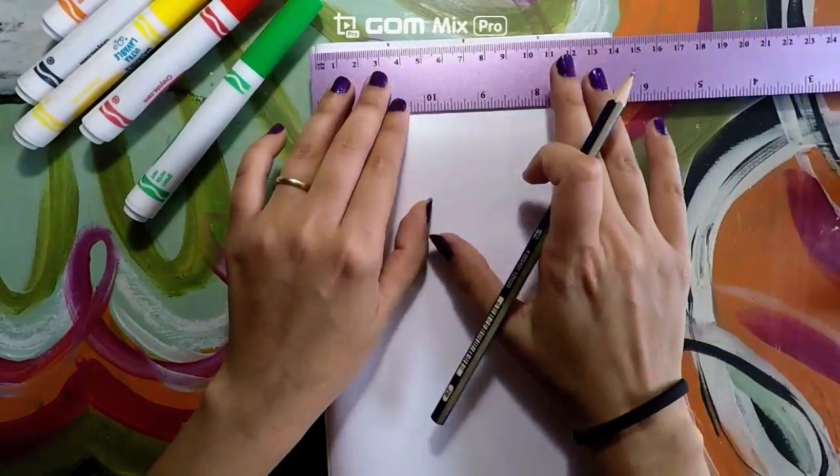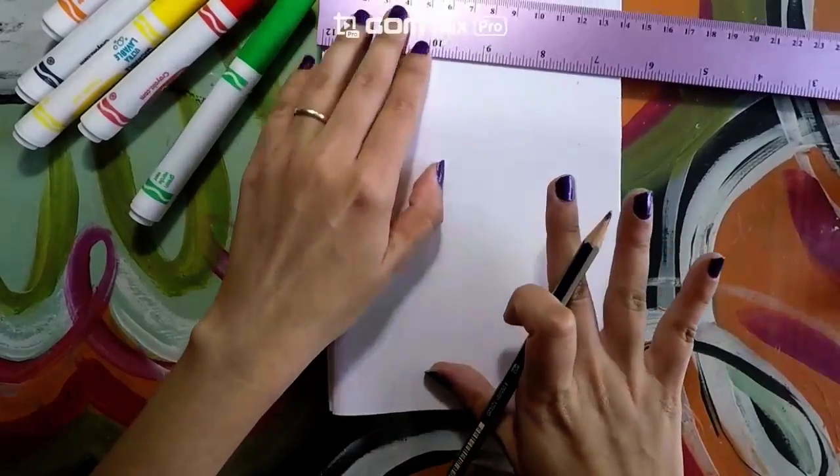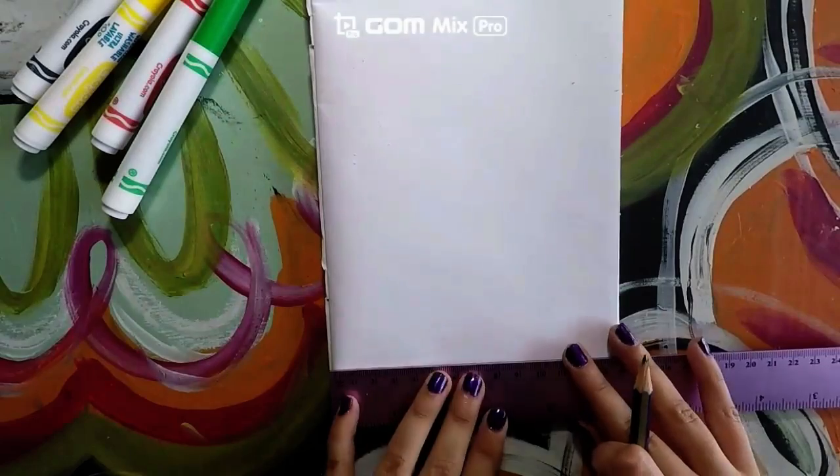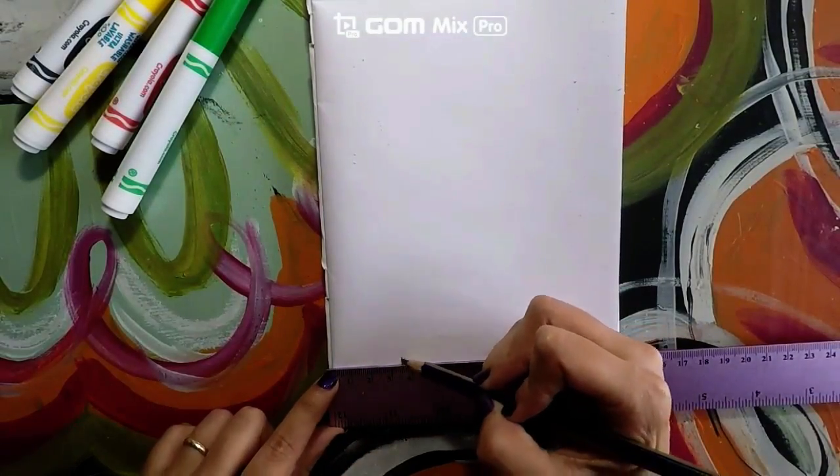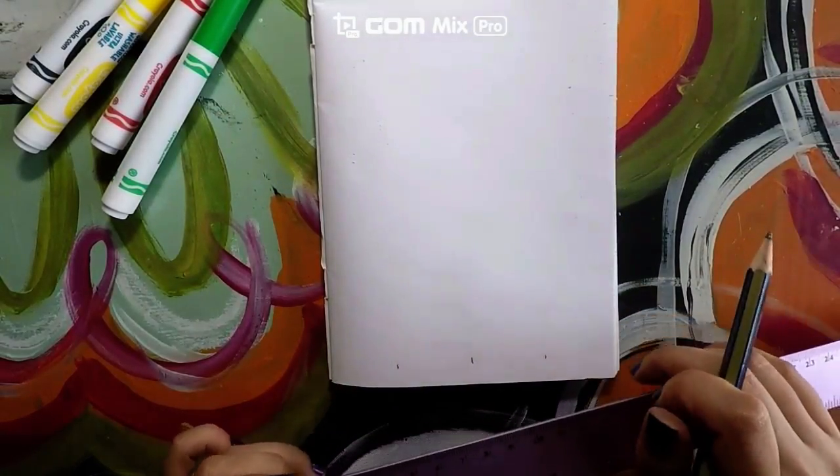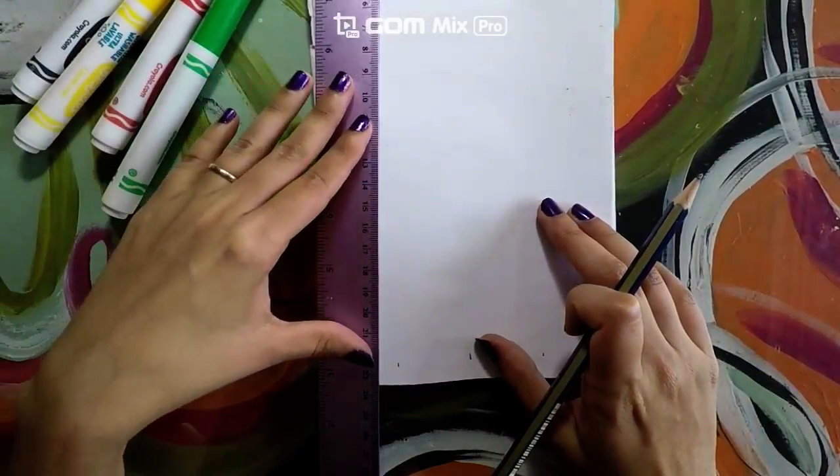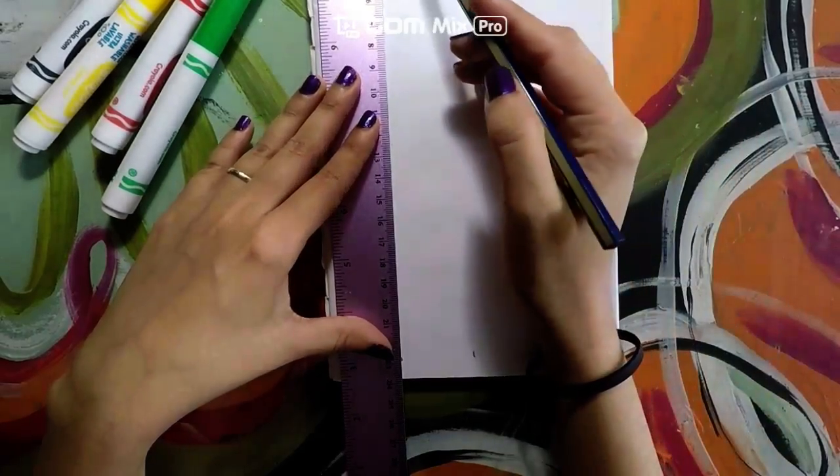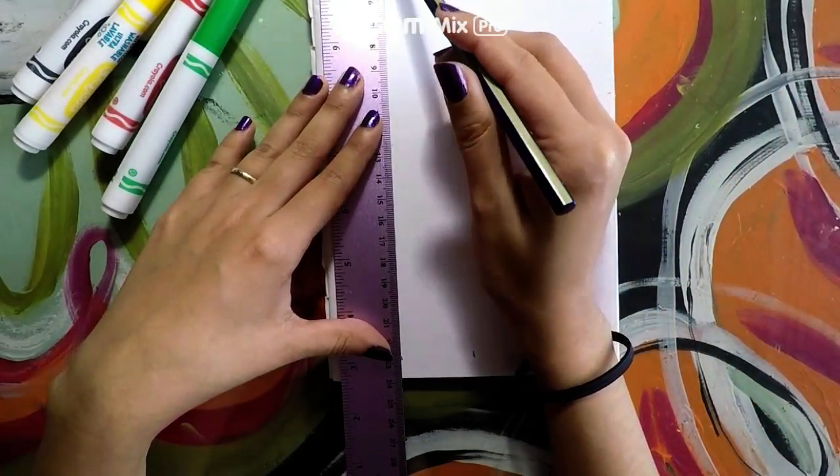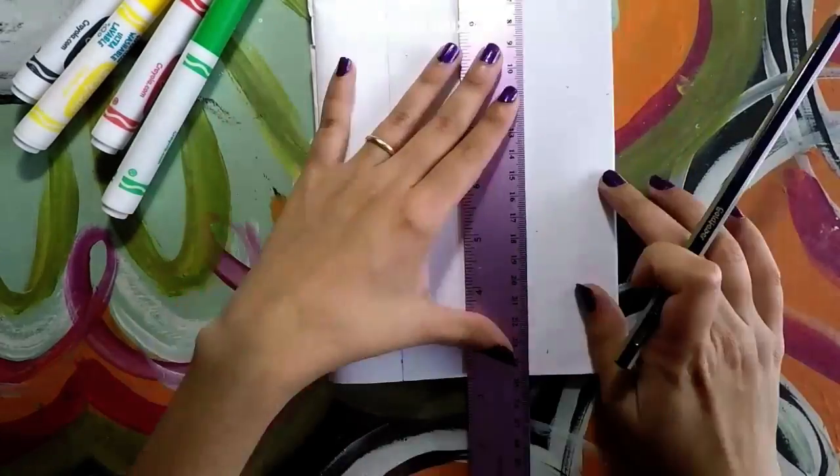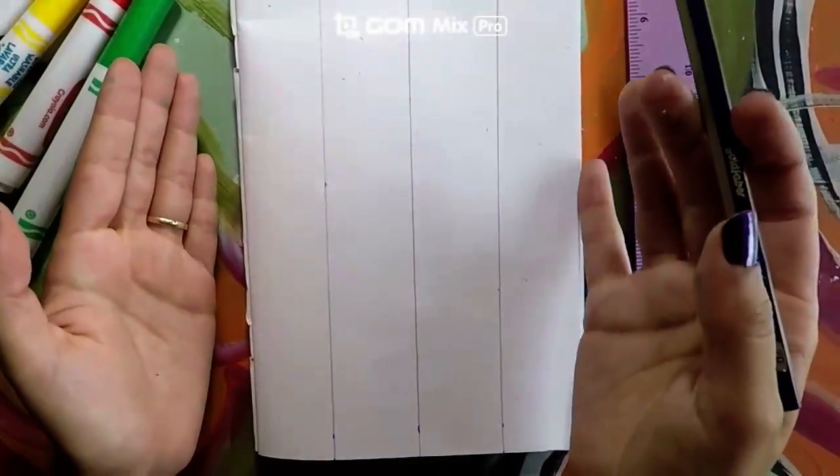I will do the same thing at the bottom. So I will bring my ruler down. Now I am done. And I will go ahead and connect the dots from the top to the bottom of the page. Just like this. There we go.